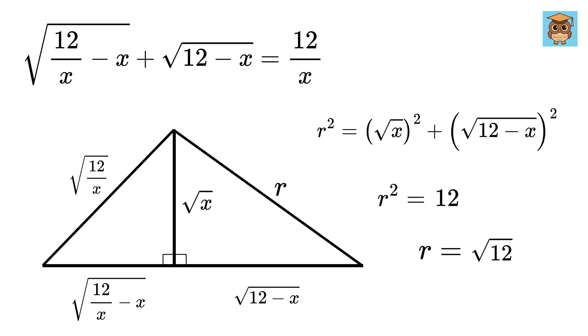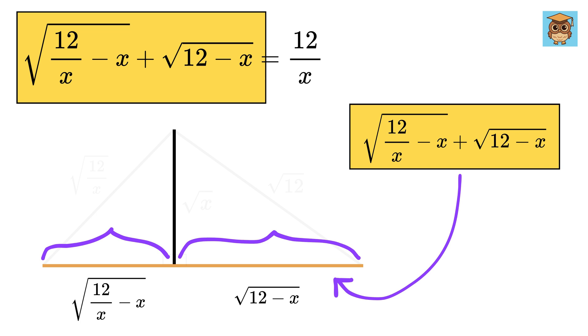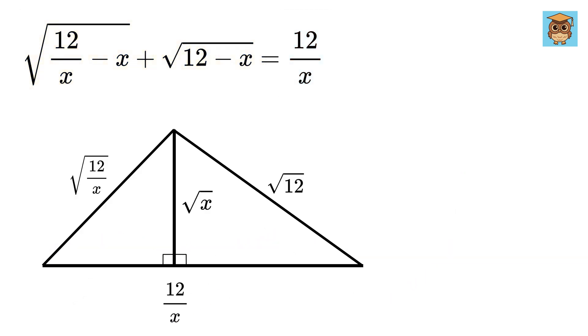So, r equals root 12. Awesome! Now, here comes the magic. What will be the length of this piece? This will be the sum of this plus this. But this sum is equal to 12 over x. So, replace it with 12 over x.